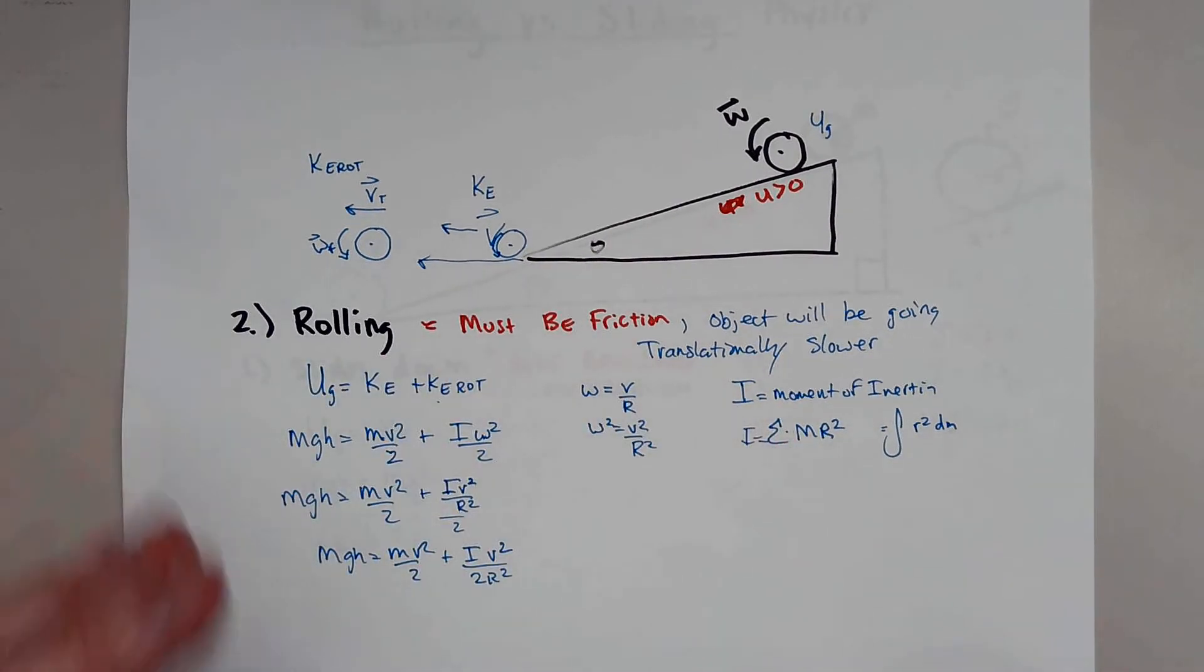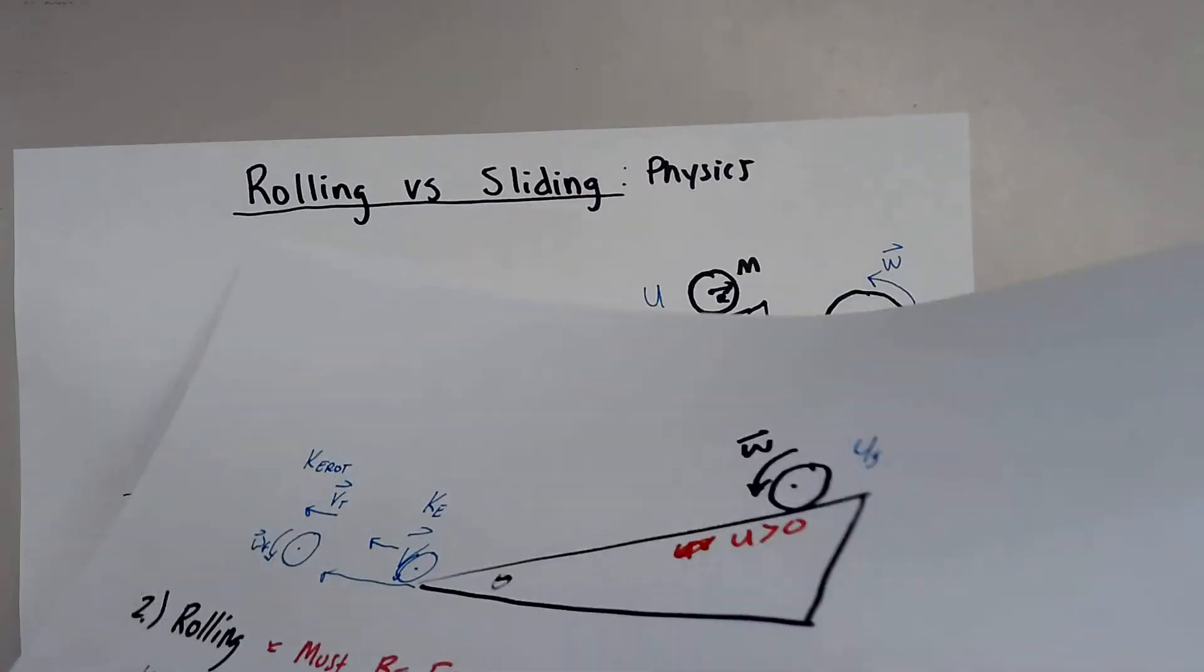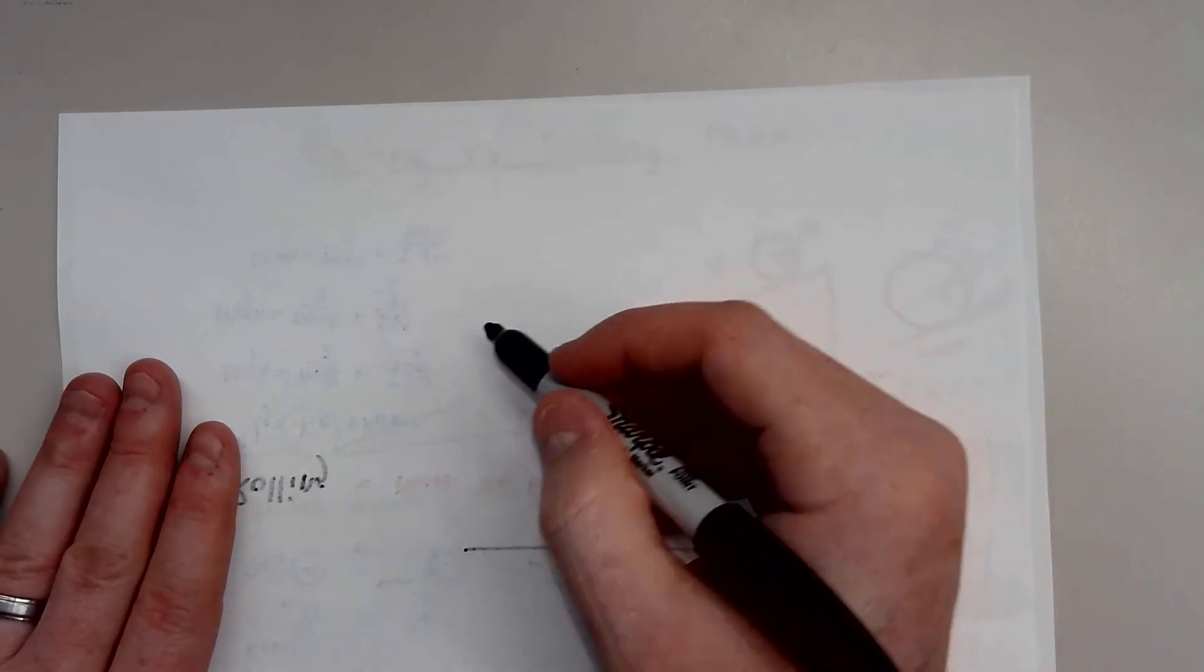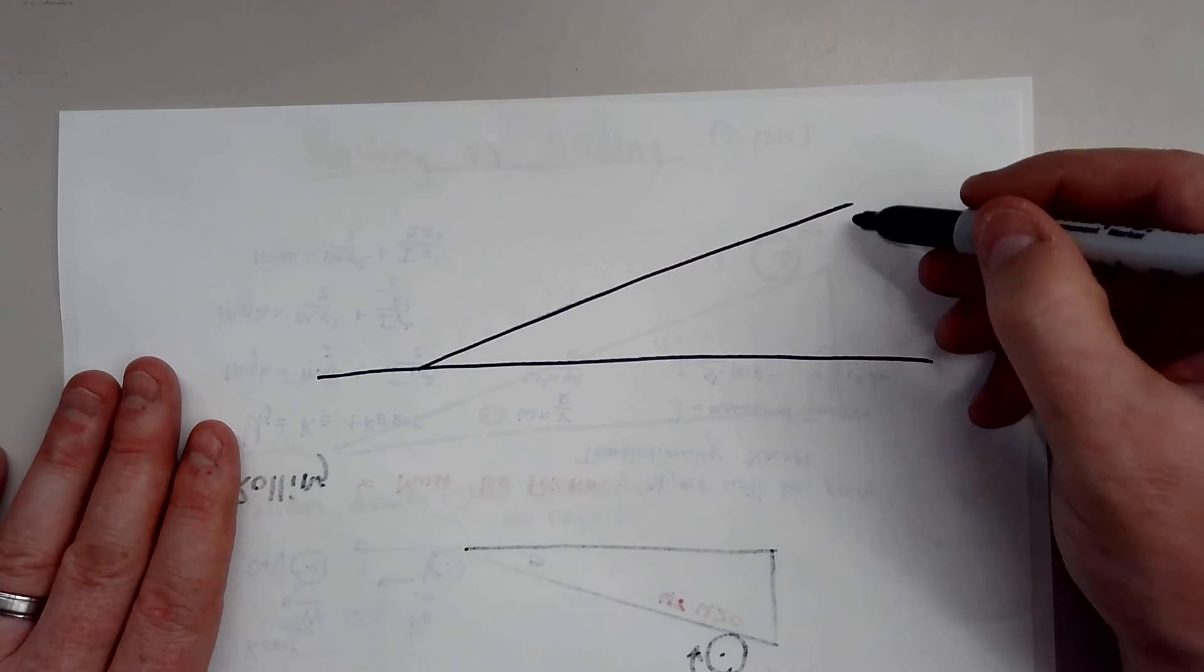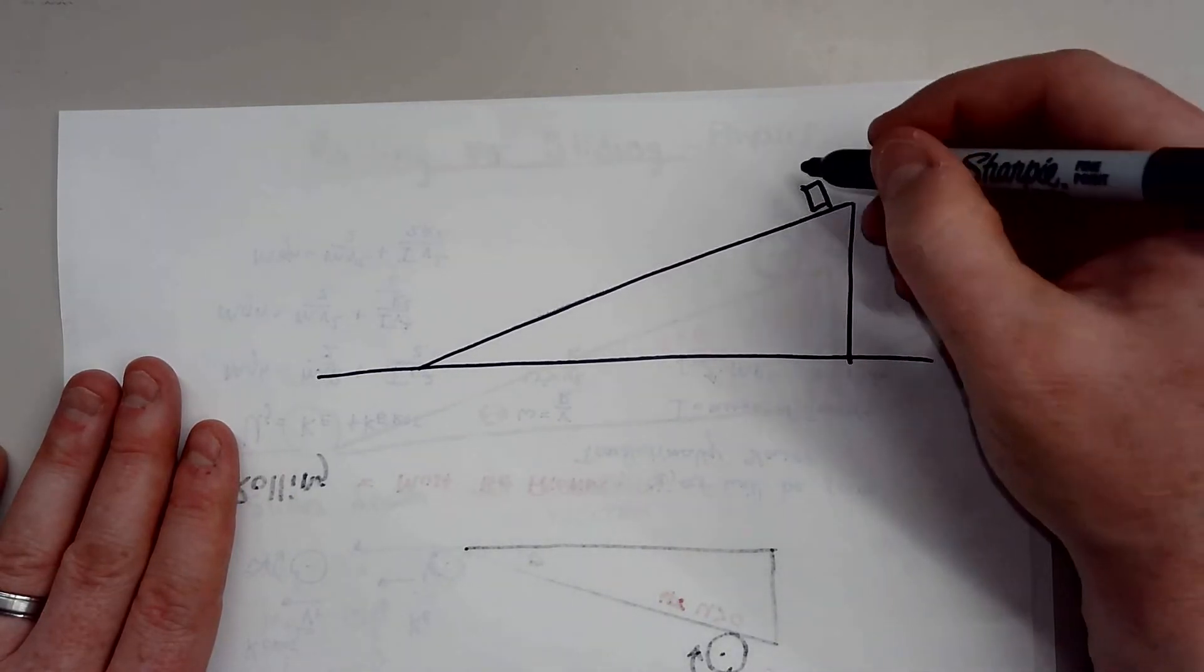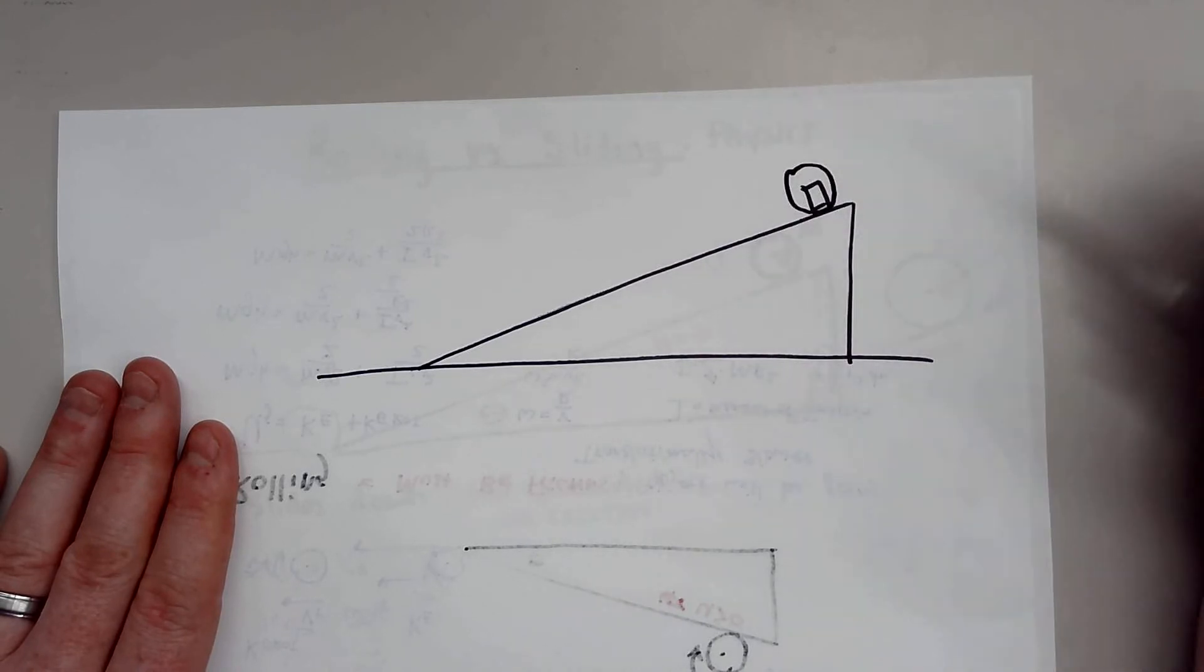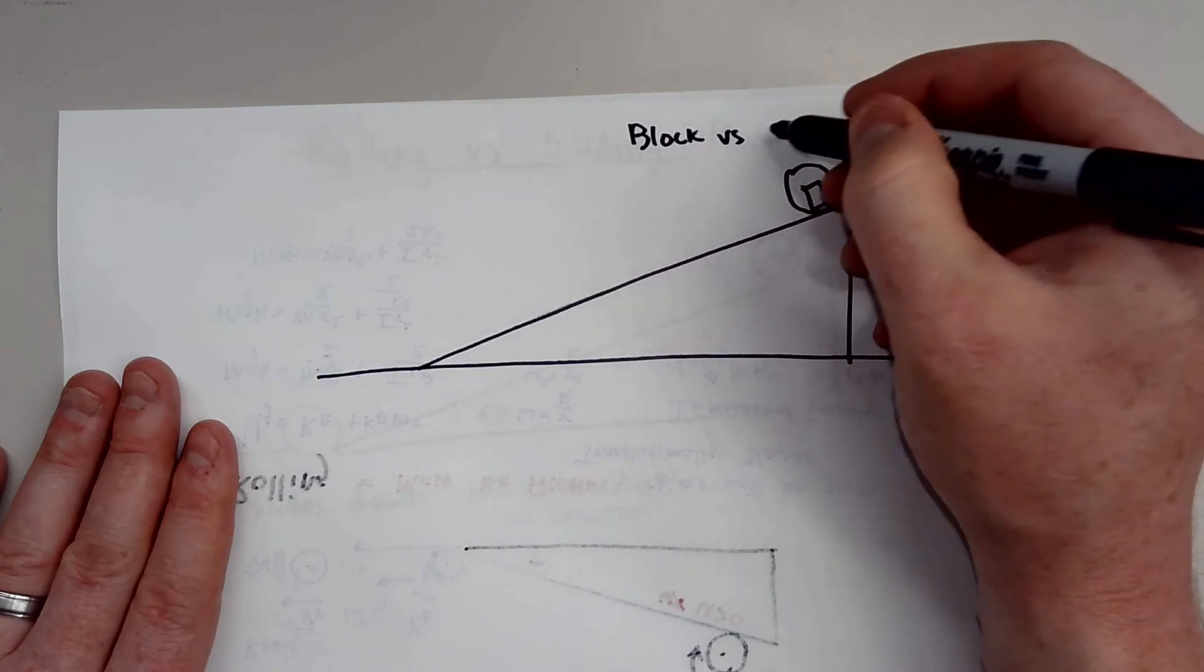And a perfect example would be something like a typical problem I see. I want to kind of use the backside of this. We see a ramp problem. And you have a block. And then you have, let's say, some sort of disk behind it. And they're going to race. So it's a block versus a disk.